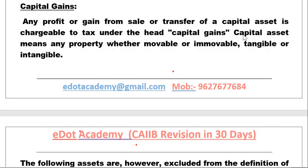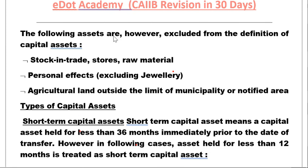Any profit or gain arising from the sale or transfer of a capital asset is chargeable to tax under the head 'Capital Gains.' Capital assets means any property — whether movable or tangible or intangible. However, the following are excluded from the definition of capital asset: stock-in-trade, stores and raw materials, personal effects, and agricultural land outside the limits of a municipality or notified area.